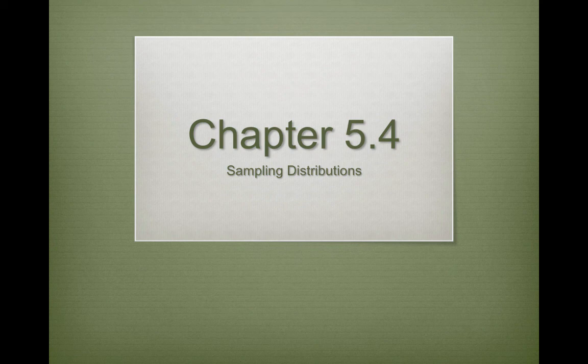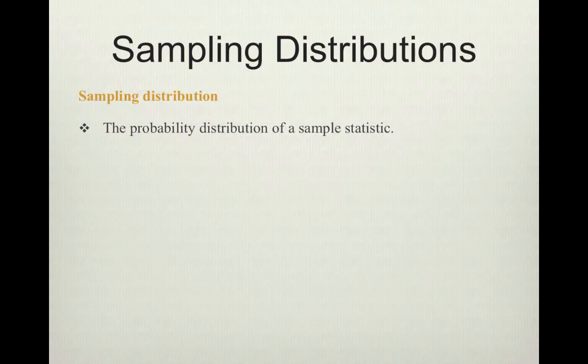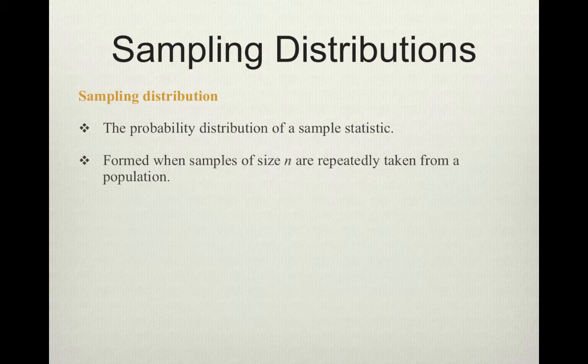Let's move on into chapter 5.4 and talk about sampling distributions. So what the heck is a sampling distribution? This is when we're going to create a probability distribution of an actual sample statistic. This is formed when samples of some fixed size n are repeatedly taken from a population.